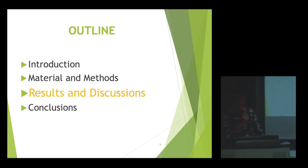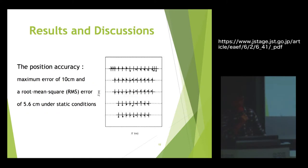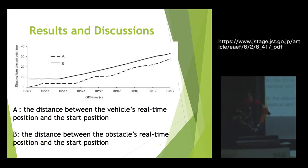And that is the result and discussion. This is the position accuracy. We see that in the right hand side, the dot is the position of the obstacle, and the triangle is the position of the obstacle detected by the 3D camera. And the paper says that the distance between the two is very approaching. The max error is only 10 centimeters.